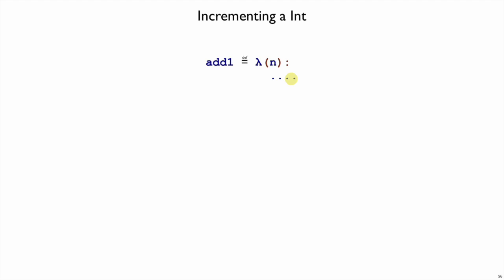Now for a programmer using numbers that are represented as church numbers, they're not supposed to think about the representation, just like you don't think about bit patterns for numbers when using them in C. But when we're implementing primitive operations like add1, that is when we do pay attention to the encoding and take advantage of it.